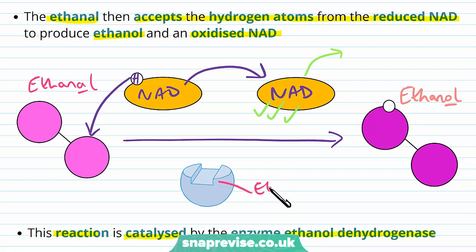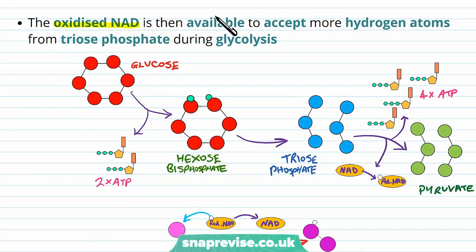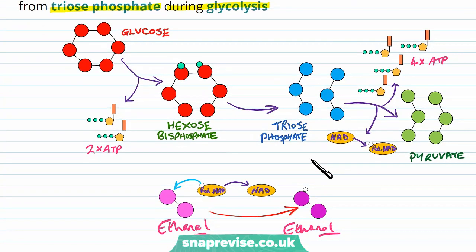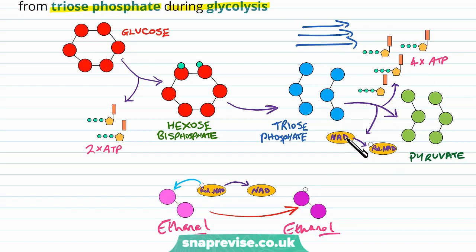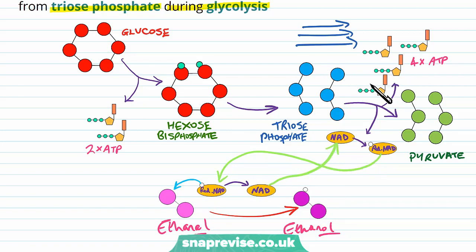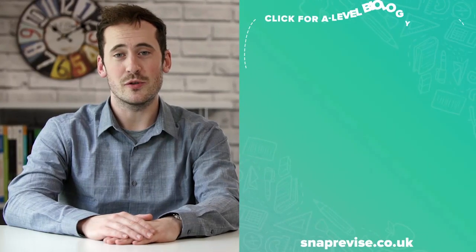The regenerated oxidized NAD goes back into glycolysis to accept more hydrogen atoms from triose phosphate, allowing ATP production to continue in plant and fungal cells. So in ethanol fermentation, pyruvate first becomes ethanal, and then ethanal becomes ethanol, with oxidized NAD regenerated so that glycolysis can keep going round.